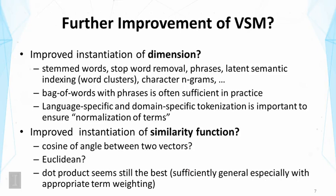There is also a possibility to improve the similarity function. So far we have used the dot product, but one can imagine other measures — for example, we can measure the cosine of the angle between two vectors, or use Euclidean distance. But the dot product seems still the best, partly because it's very general. In fact, the cosine measure can be regarded as the dot product of two normalized vectors: we first normalize each vector and then take the dot product, which is equivalent to the cosine measure. I should mention that BM25 seems to be one of the most effective formulas, and there has been further development in improving BM25, though none of these works have changed BM25 fundamentally.